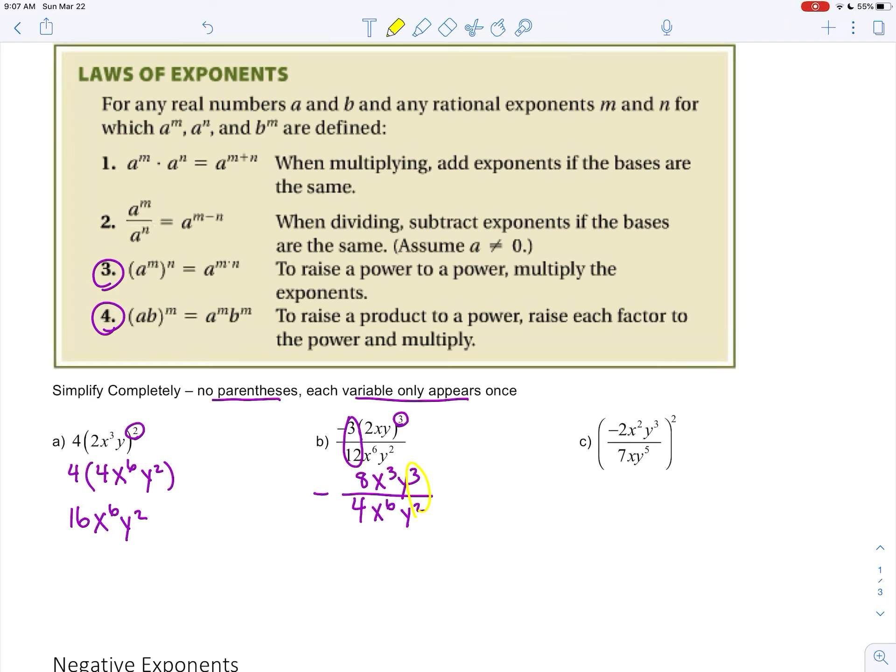Now take a look at what's going on here. There's more factors of y in the numerator, so I can subtract the exponents. 3 minus 2 is 1. There's one factor of y left. There are more factors of x in the denominator. I will still subtract but I will be keeping 3 factors of x in the denominator because there are more down there.